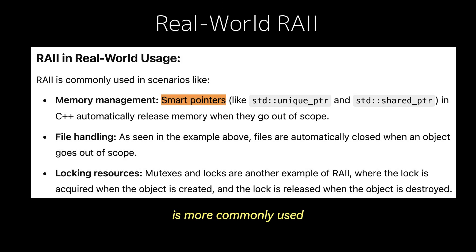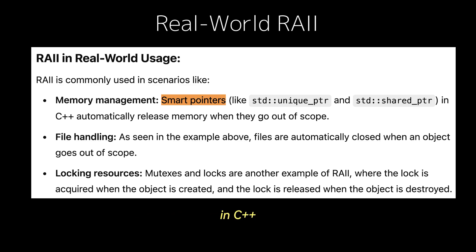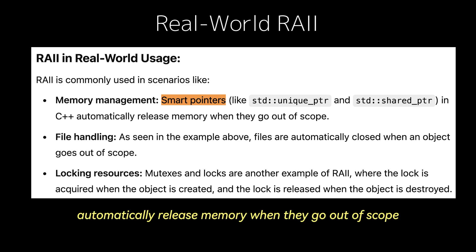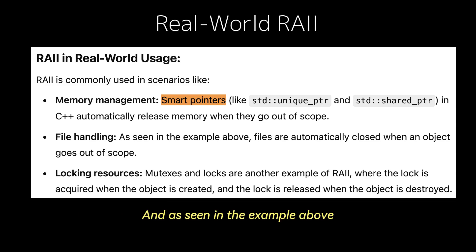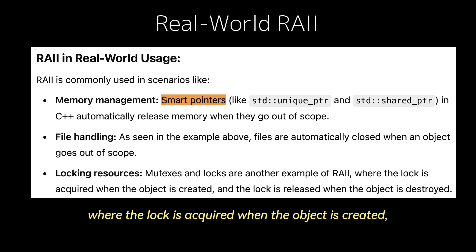RAII is more commonly used in the real world than you might expect. Smart pointers like std::unique_pointer and std::shared_pointer in C++ automatically release memory when they go out of scope. As seen in the example above, files are automatically closed when an object goes out of scope. Mutexes and locks are another example of RAII, where the lock is acquired when the object is created and released when the object is destroyed.